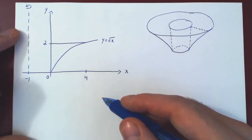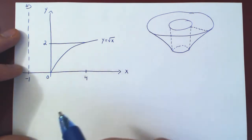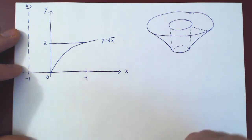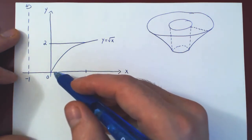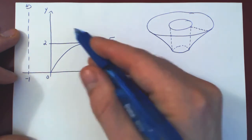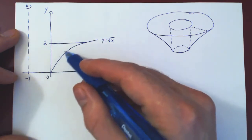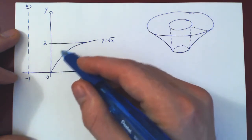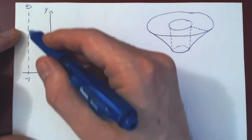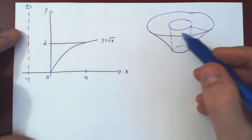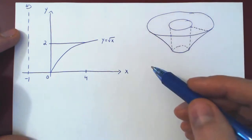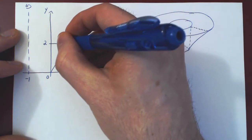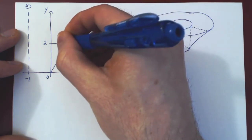In this video, we want to solve the same problem as in the previous video, but instead of using a set of horizontal rectangles, we will use a set of vertical rectangles. We had the following region in the first quadrant of the x-y plane, bounded by the curves y equals root of x, y equals 2, and the y-axis, and we revolve this region about the vertical line x equals negative 1. This generates a solid of revolution, and we're trying to compute its volume. Now let's attack this with vertical rectangles.